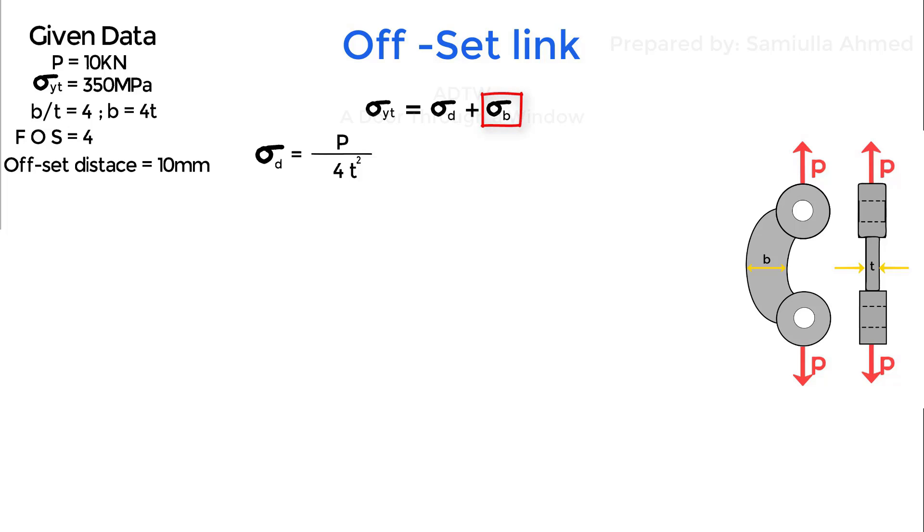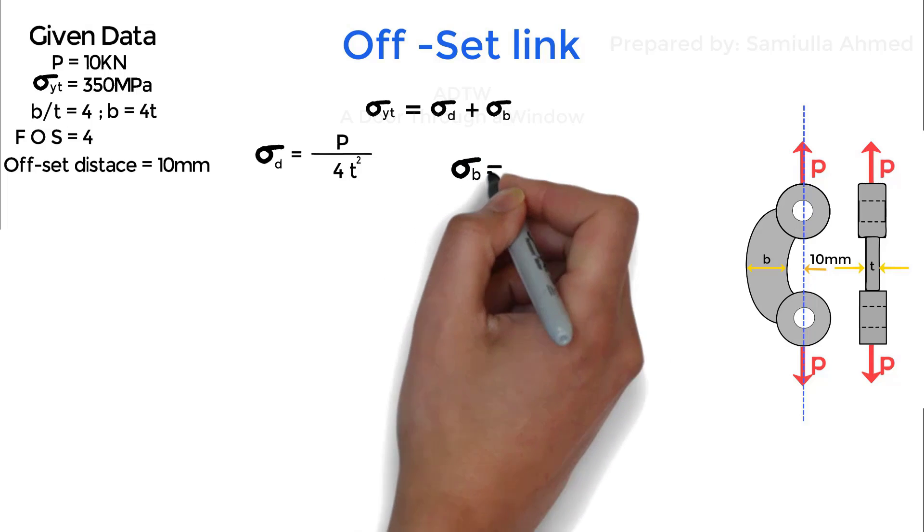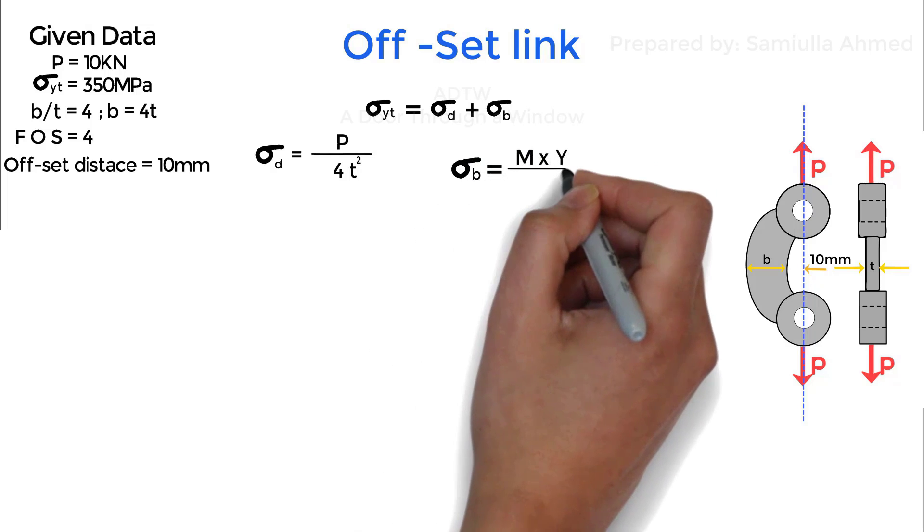Now second we will find sigma bending which is bending stress due to the offset. Sigma bending is given as M times y upon I.